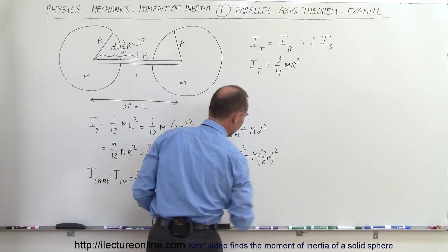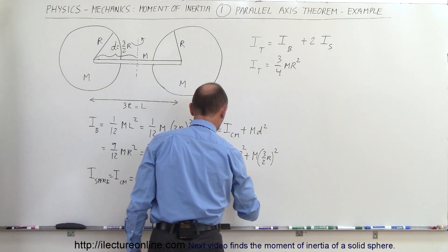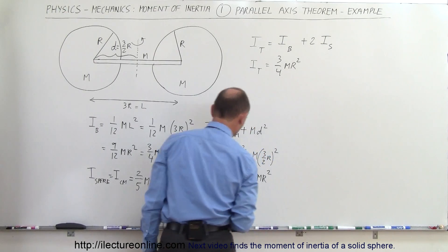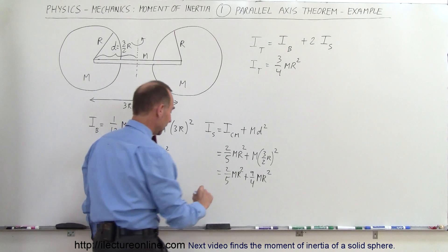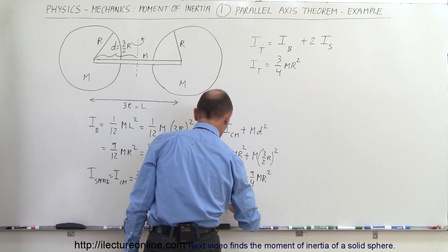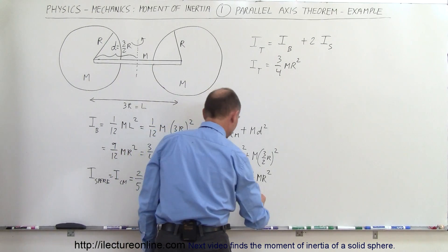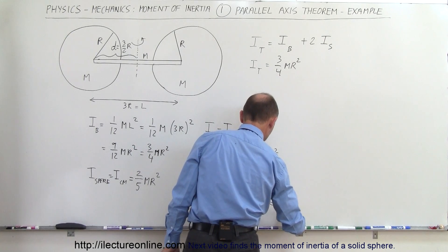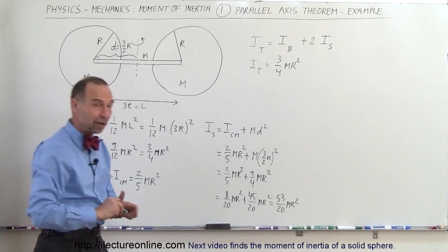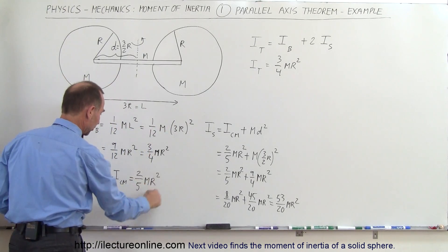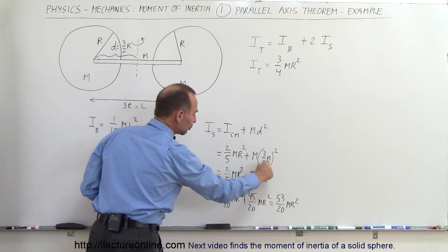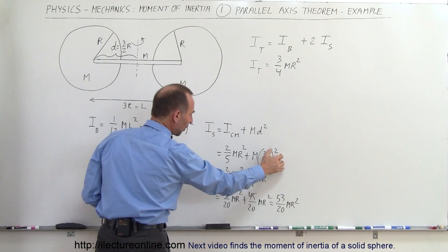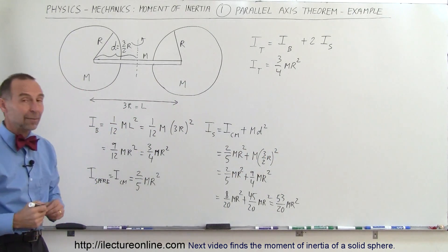So we have (2/5) mr² plus (9/4) mr². To add these, the common denominator is 20: (2/5) becomes (8/20) and (9/4) becomes (45/20). Combining gives (53/20) mr². That is the moment of inertia of a sphere normally rotating about its own axis with moment (2/5) mr², but displaced by (3/2) r, yielding a total of (53/20) mr² via the parallel axis theorem.